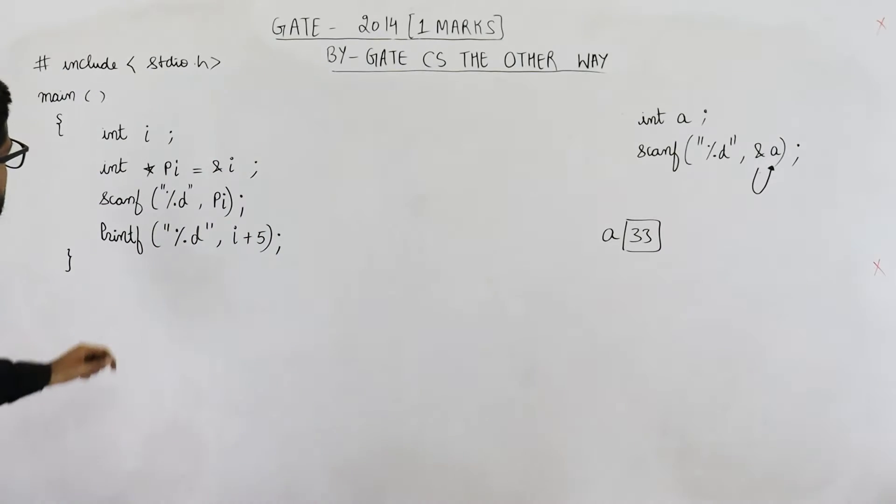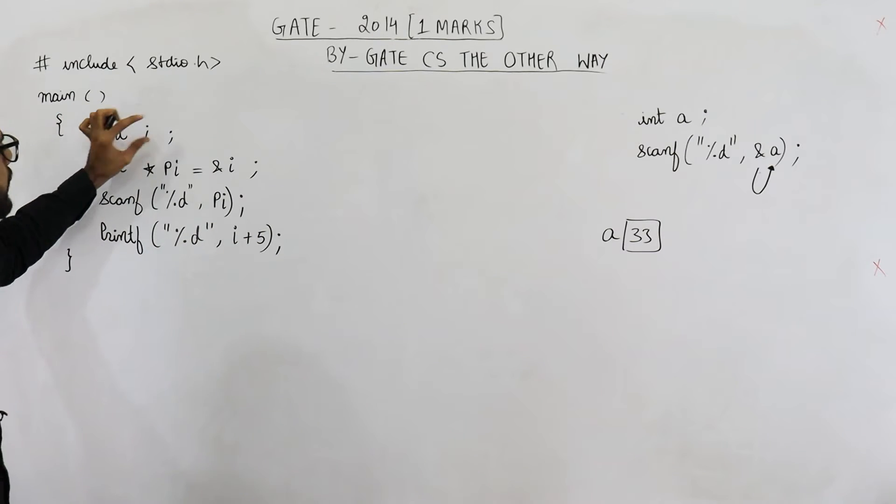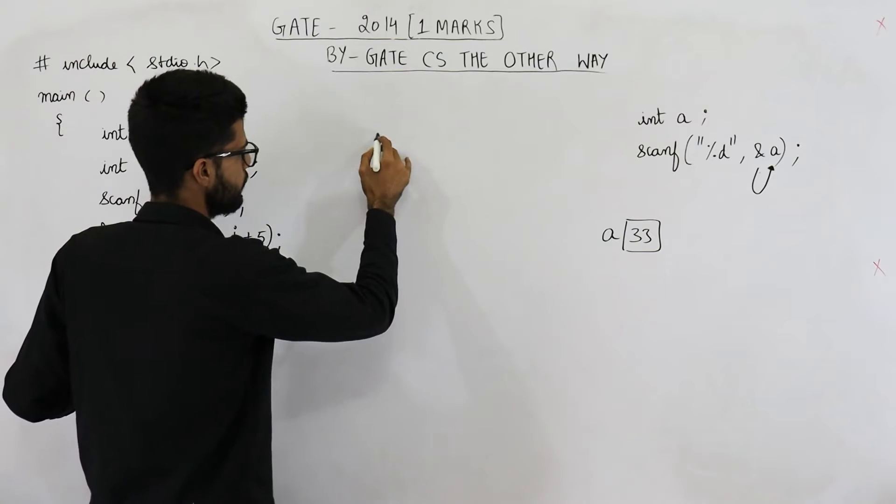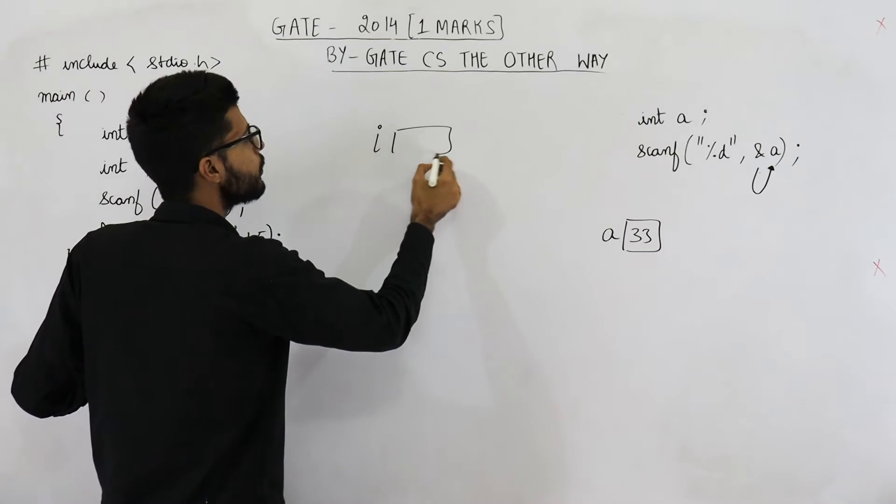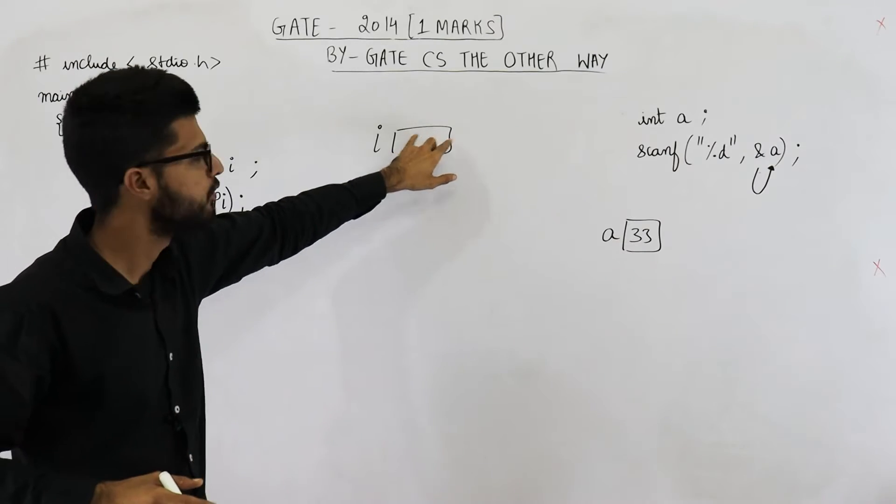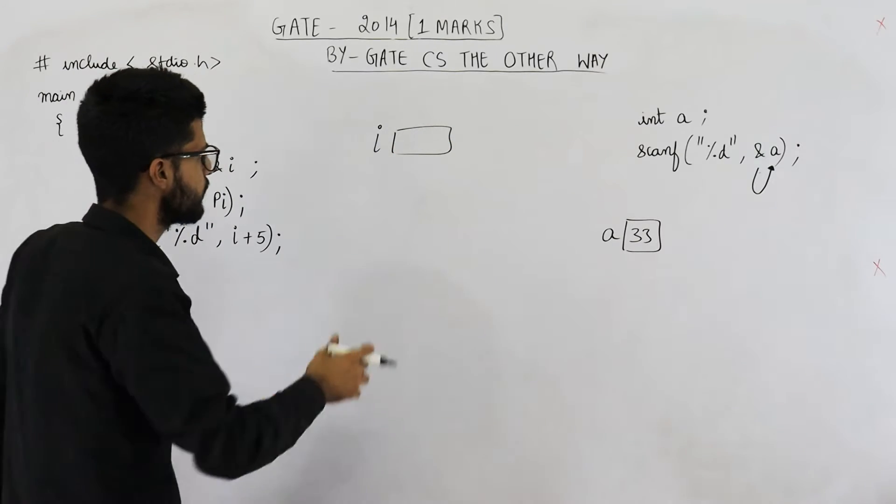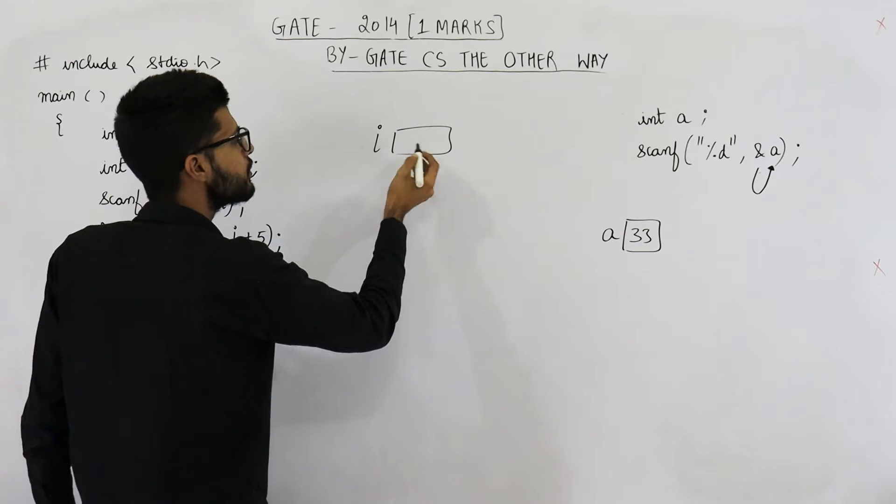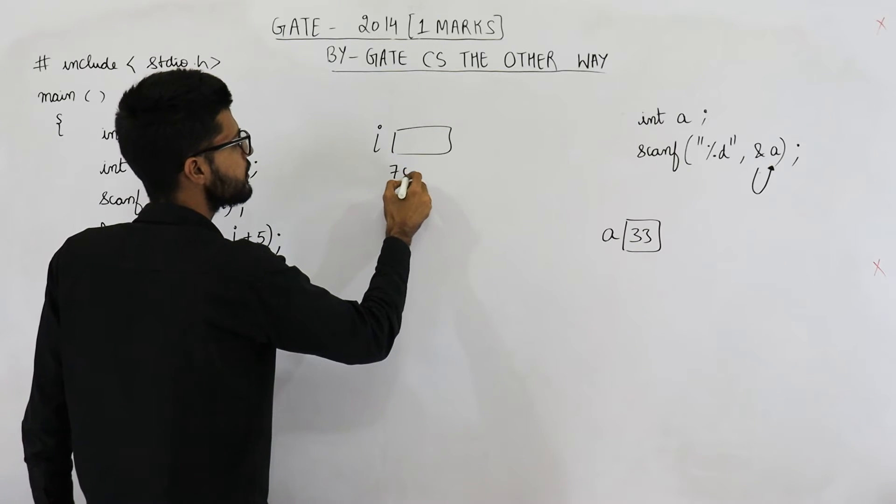Now let us have a look here. First of all, we are declaring an integer called i. So i is declared, some random value will be saved in i. We don't care what that value is. There will be some random garbage value. Suppose address of this variable is 700.